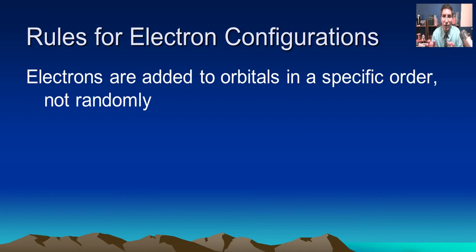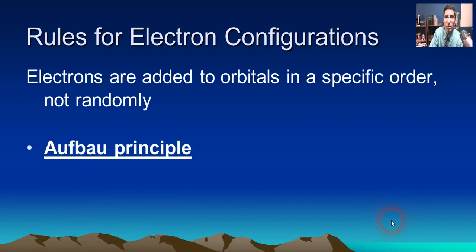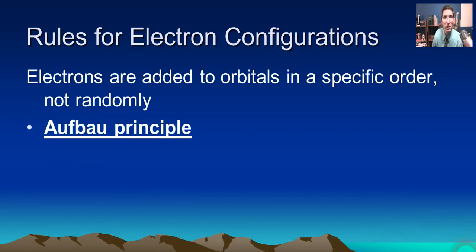And even within those sublevels, we actually assigned arrows into the boxes in a very specific order. We don't say today we'll start with 3d, and then we'll throw one in 4f, and then we'll have one in 2s, and then 1s. No, it's not like that. These electrons are added very specifically in a very specific order.